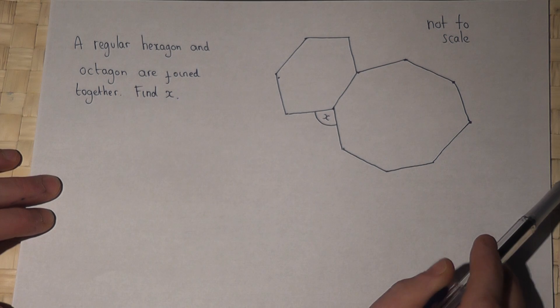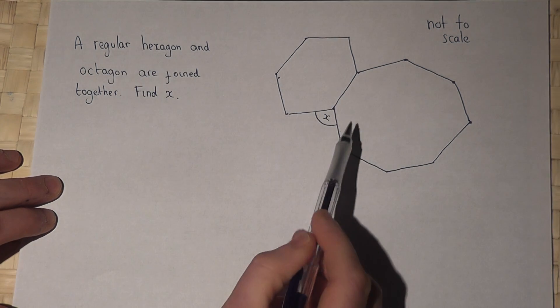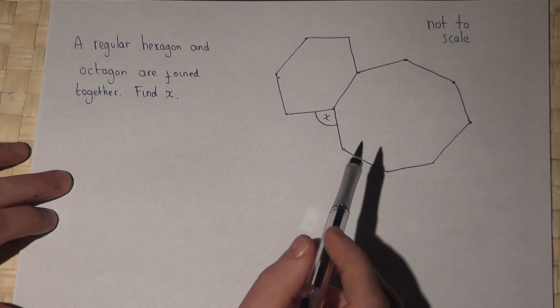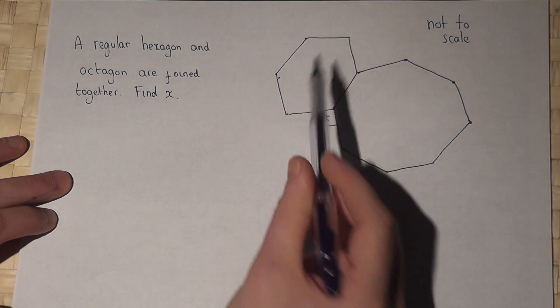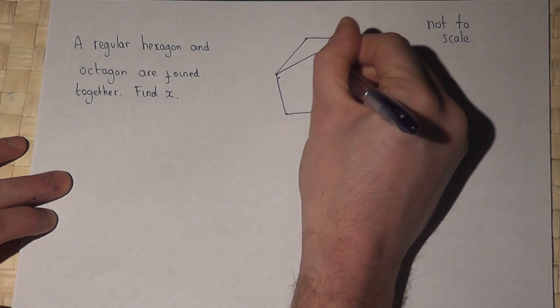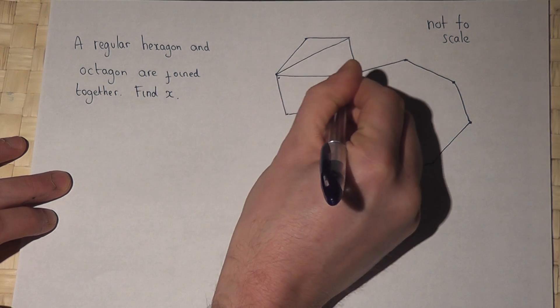However, because we're told they're regular, we can work out what angle X is. Now then, if we look at the hexagon, I can split this hexagon into four triangles.